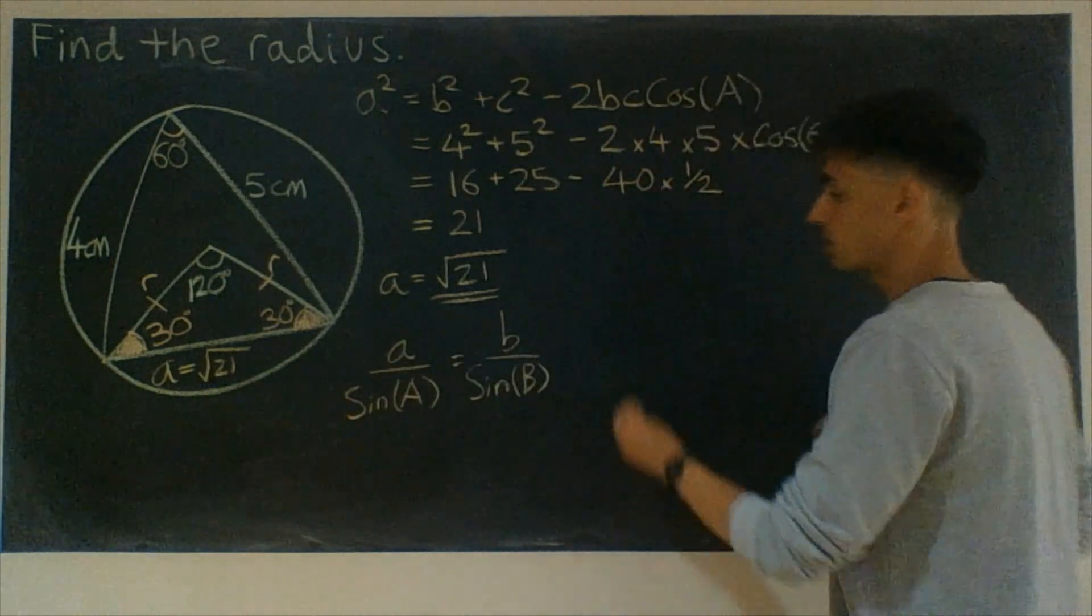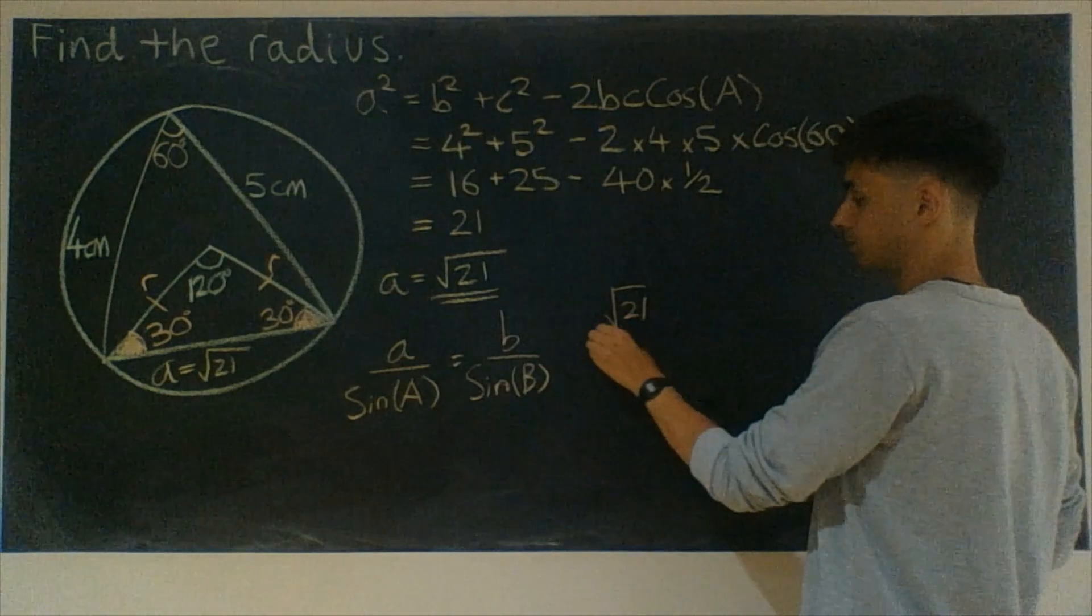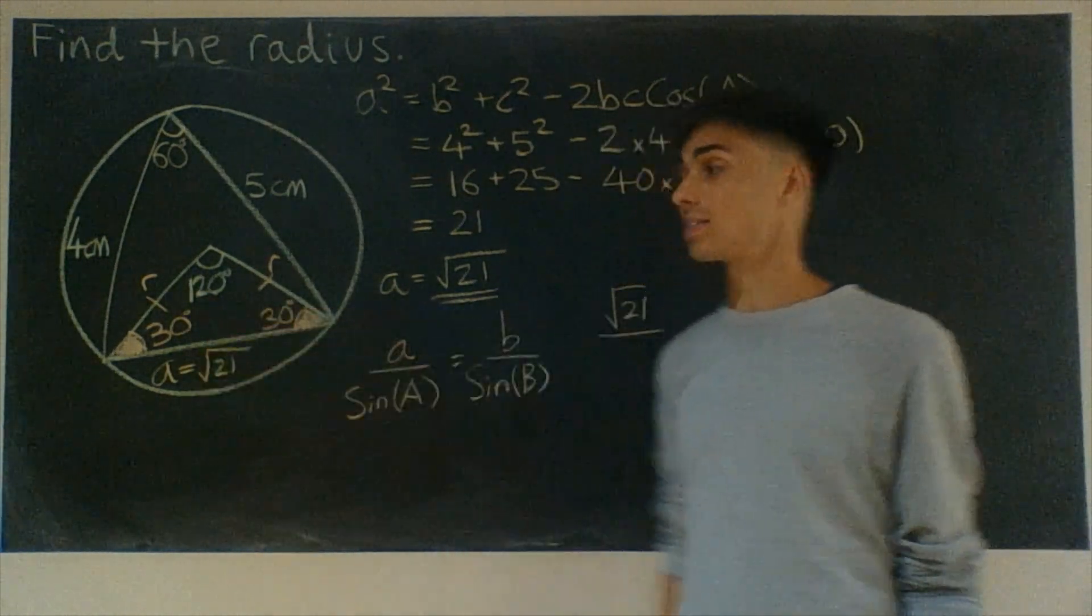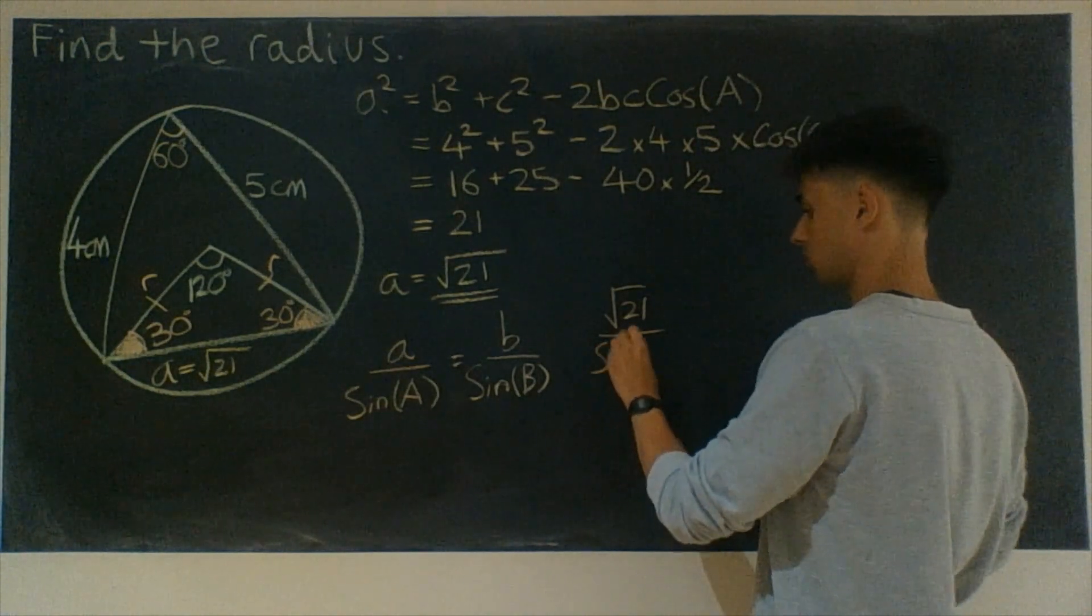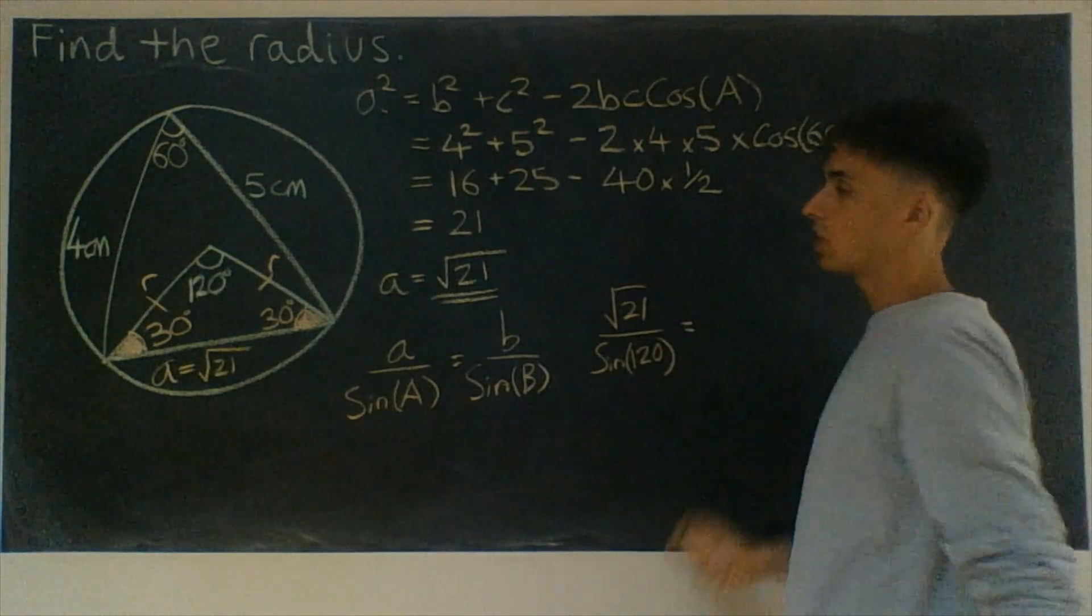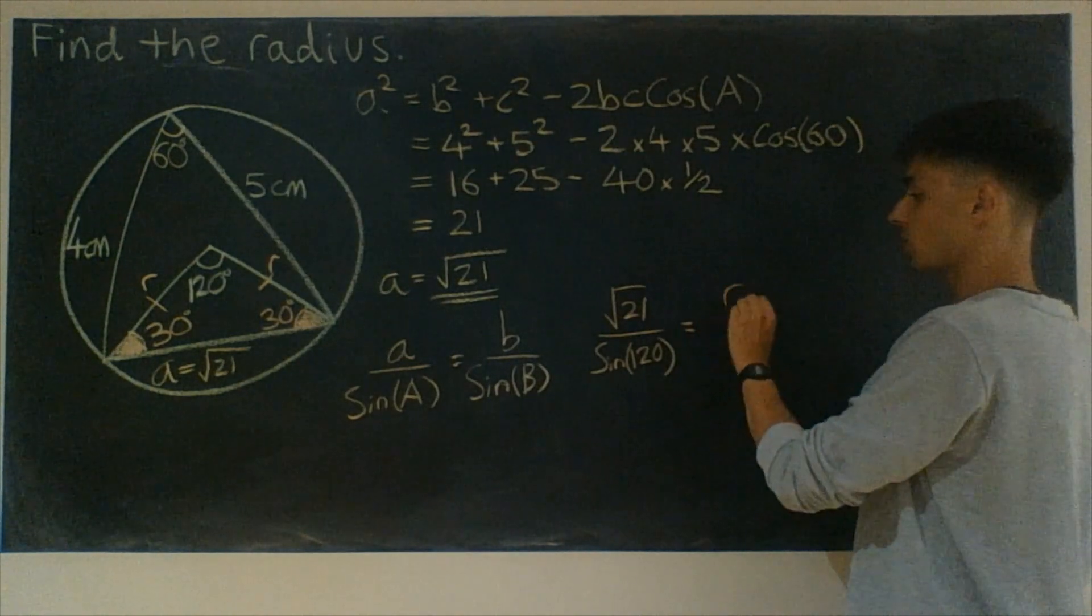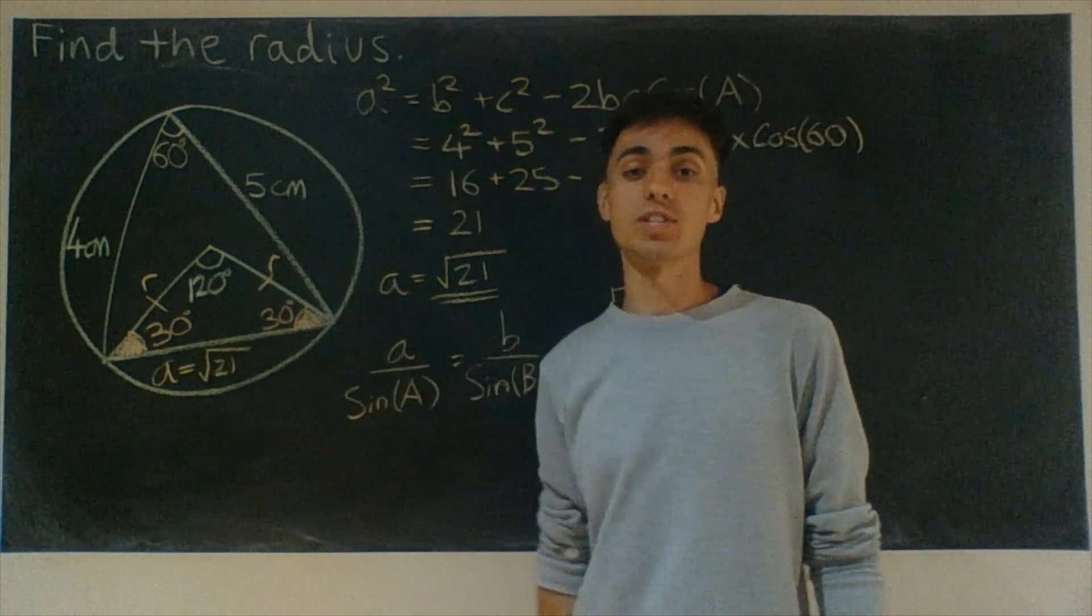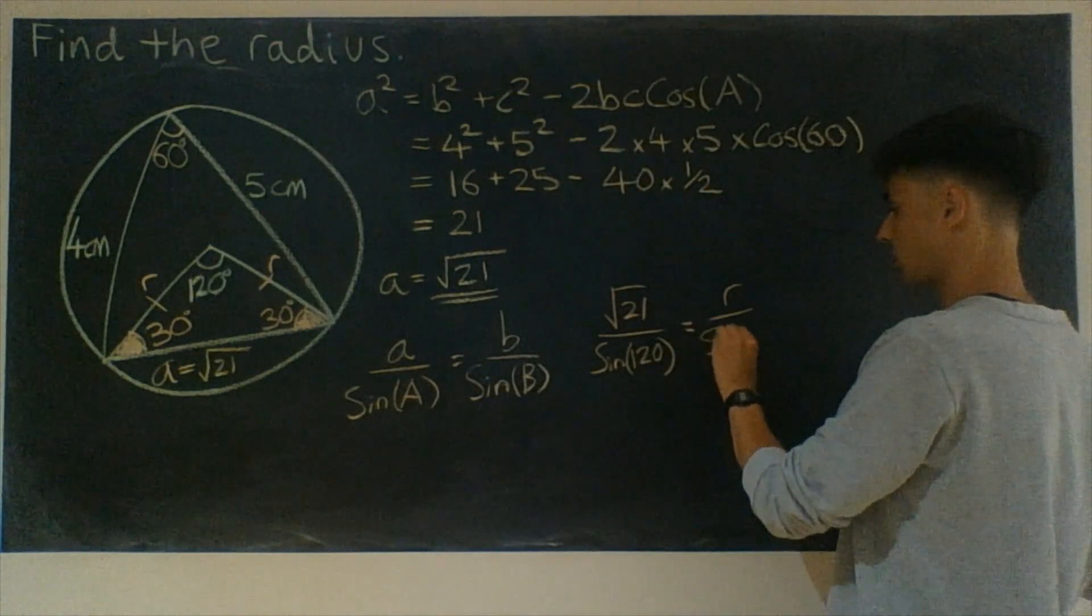So let's try it. Side A, let's choose as root 21. And the angle opposite it is 120. So we want sine 120 equals the other side B is just R. That's our radius of our circle. And opposite R is 30 degrees. So we want sine of 30 degrees.